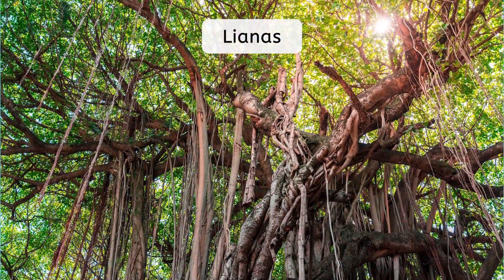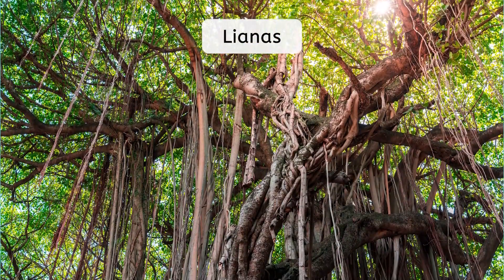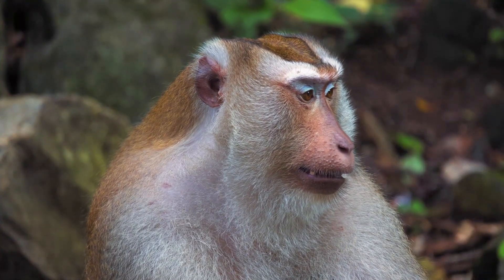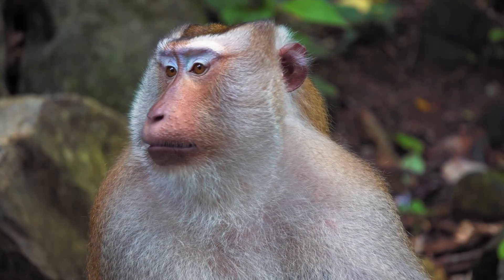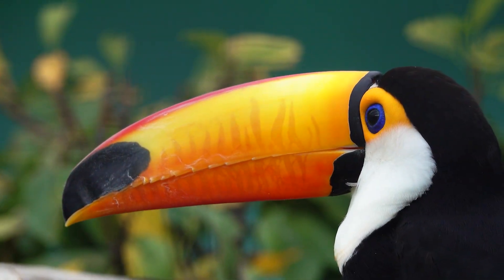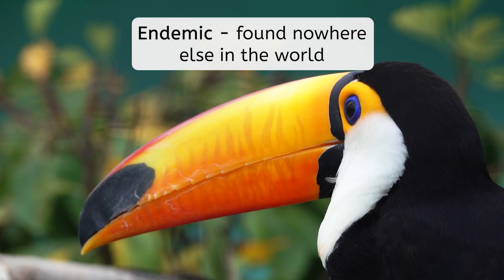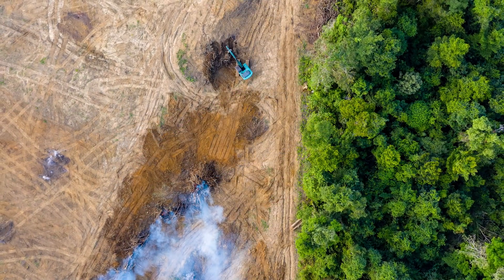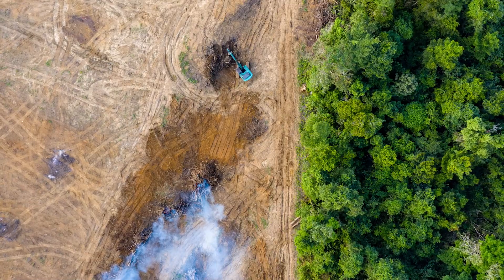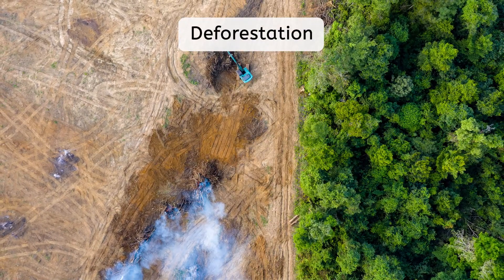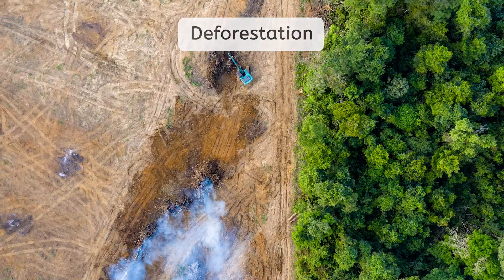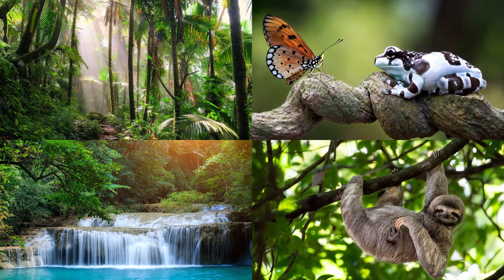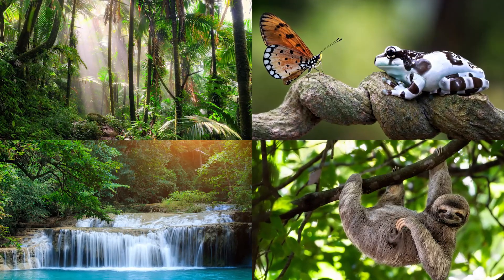You'll also find lianas here, which are woody vines that climb up trees. Tropical rainforests are home to a diverse range of animal species, including primates, big cats, reptiles, and a wide range of birds and insects. Many of these species are endemic, meaning they are found nowhere else in the world. Despite their rich biodiversity, tropical rainforests are under threat from deforestation, caused by logging, agricultural expansion, and mining. Efforts to protect and conserve tropical rainforests are essential to maintain the health of our planet's ecosystems and biodiversity.